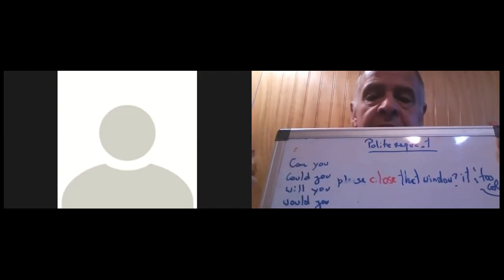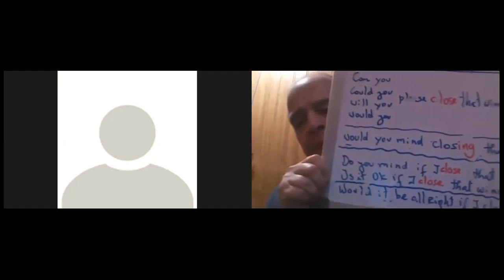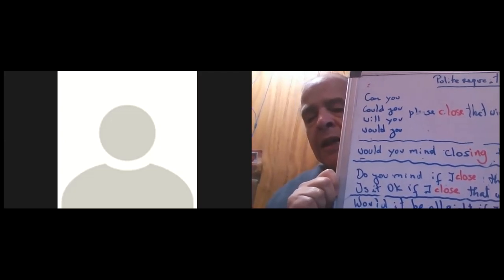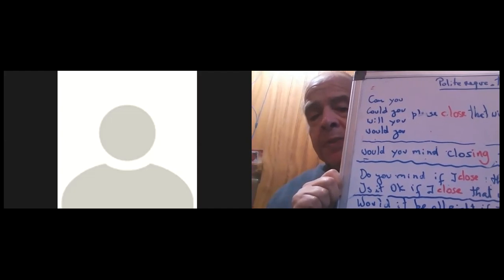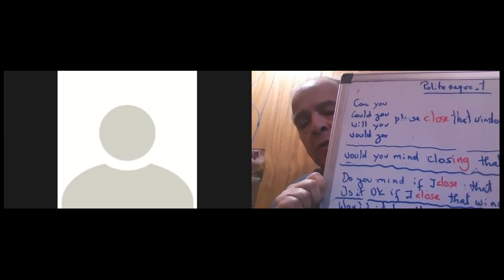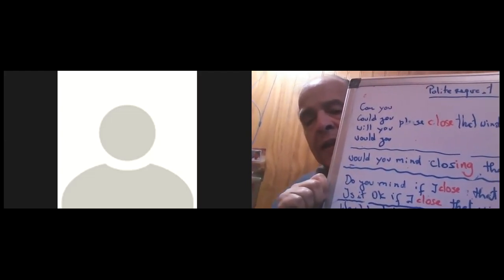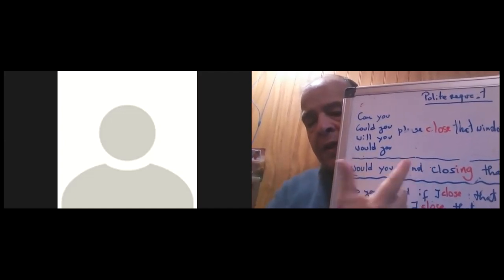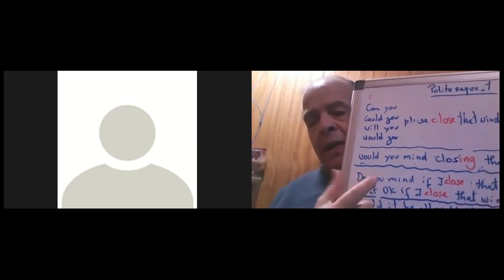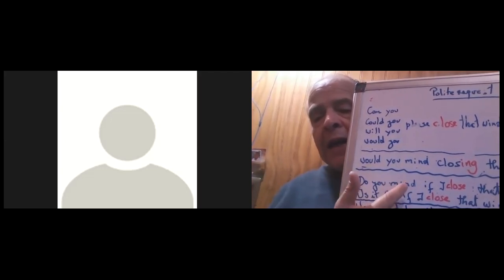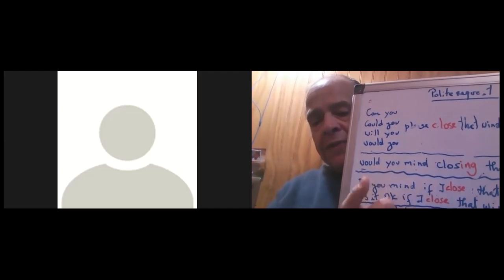The second expression is 'Would you mind' — it's very polite. The difference is that when you use 'Would you mind,' you have to use the verb with -ing: 'Would you mind closing that window? It's very cold in here.' With modals you use the infinitive; with 'would you mind' you use -ing. For 'Do you mind,' you can use it with -ing: 'Do you mind closing the window?' or as a clause: 'Do you mind if I close the window?' — in that case you use the infinitive.